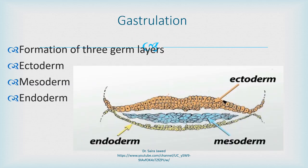The term gastrulation refers to the formation of three germ layers: ectoderm, mesoderm, and endoderm. This is the most characteristic event which occurs in the third week of development. The term germ layers specifies that further organs and structures will arise from these three germinal layers. Most of the muscular tissue arises from the mesoderm — this middle layer gives rise to most of the muscular tissue present in the human body.